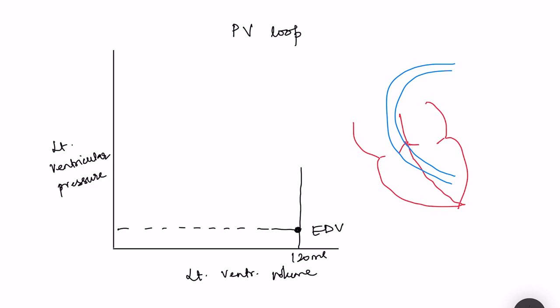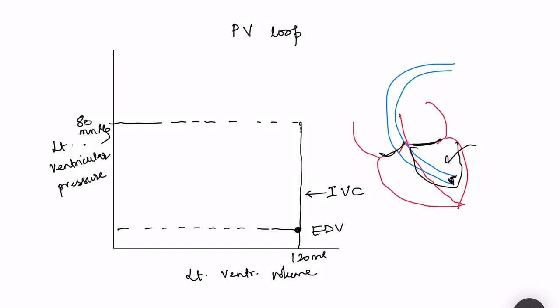At the end of diastole, the left ventricle starts contracting, and because of this contraction there is a tremendous increase in pressure in the left ventricle, but the volume doesn't change. This phase is the isovolumetric contraction phase, where both the AV valves and the semilunar valves are closed. Volume cannot enter or exit the ventricle, but since it is contracting there is a build-up of pressure, rising to approximately 80 millimeter mercury — that is the diastolic blood pressure, the same pressure present in the aorta.